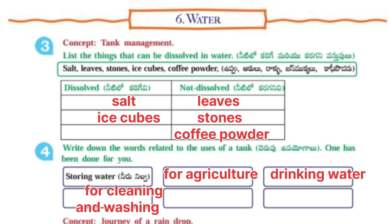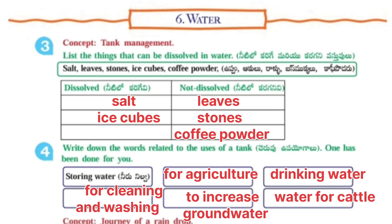Next: Write down the words related to the uses of tank — one has been done for you. Storing water. For agriculture, drinking water. For cleaning and washing. To increase groundwater. Water for cattle.